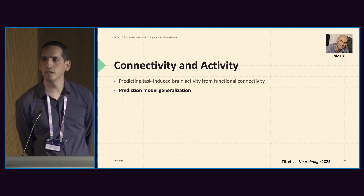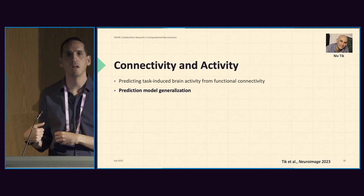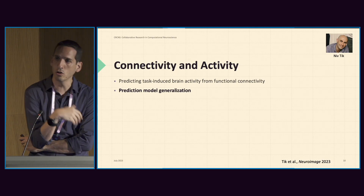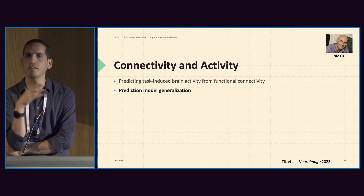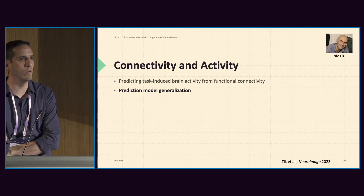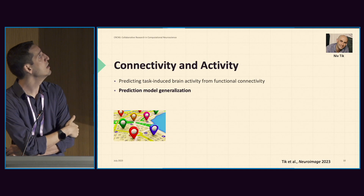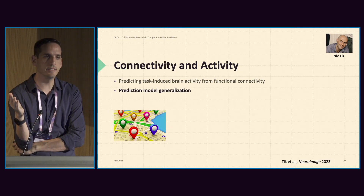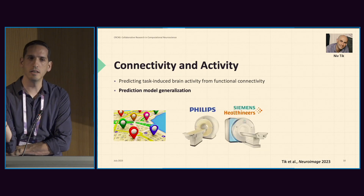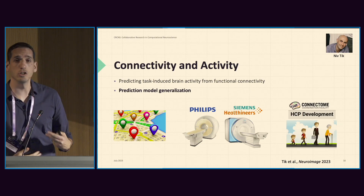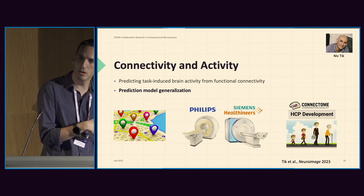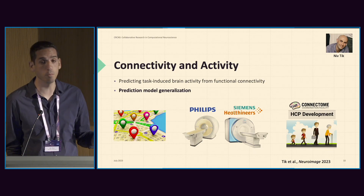In the last couple of years we did a lot of methodological work to see how robust it is and to examine the generalizability of our prediction framework. We have several posters outside. Briefly, we can generalize our prediction of tasks from rest across sites, across vendors, and across populations. For instance, we can build a model trained on young healthy adults and then apply the model on children from the Developmental Connectome.